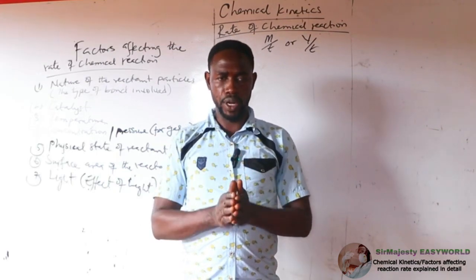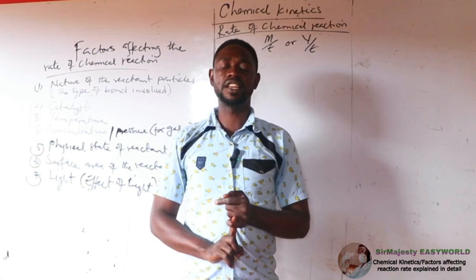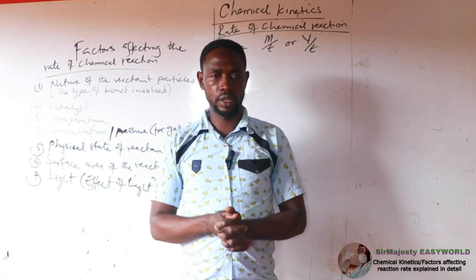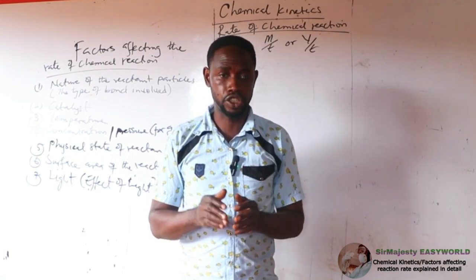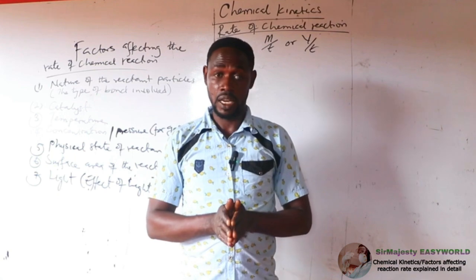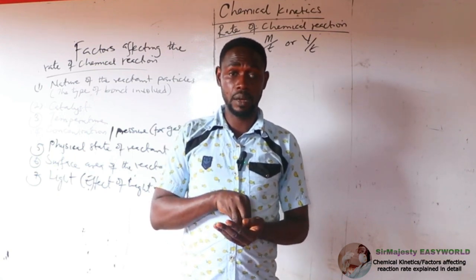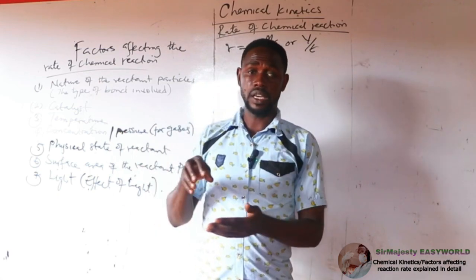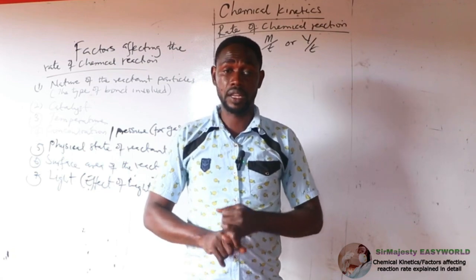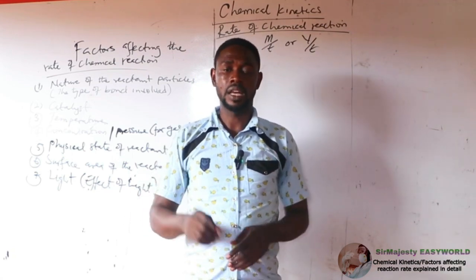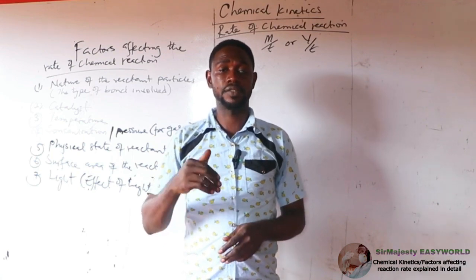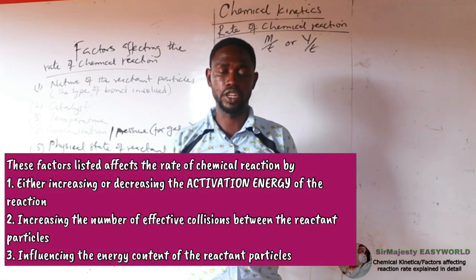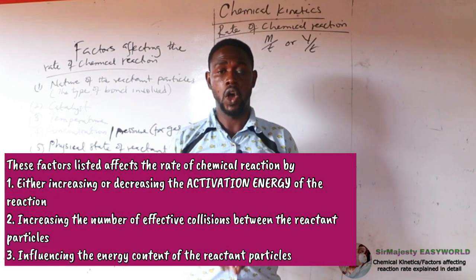These factors affect the rate of chemical reaction in two or three ways. One way is to increase the kinetic energy of the reactant particles — to affect their enthalpy. The energy content of a substance is called the enthalpy. Secondly, they can affect the activation energy of the reaction. They will also affect the number of effective collisions of the reactant particles.